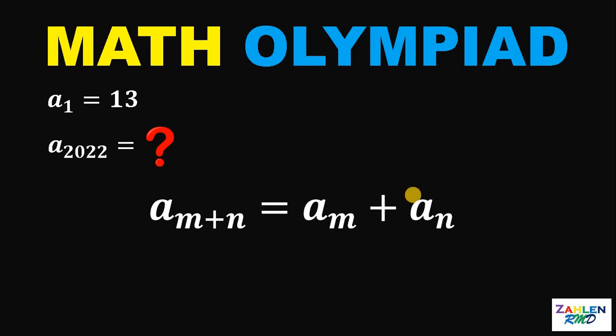What we need to do is to understand this notation: a sub m plus n equals a sub m plus a sub n. So what does it mean? Let's say, for example, let m equals 9 and n equals 5. So this becomes a sub 9 plus 5 equals a sub 9 plus a sub 5. And that's it.